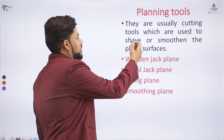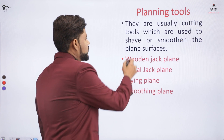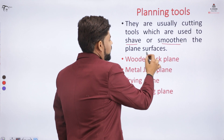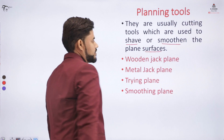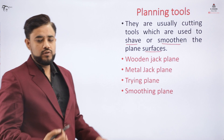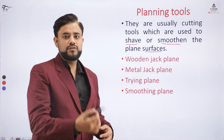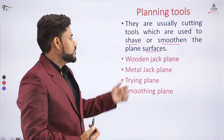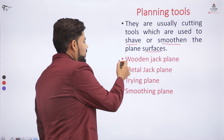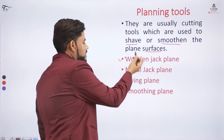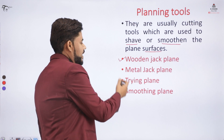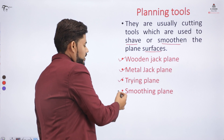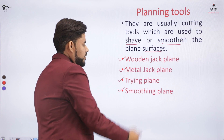Coming to the planing tool — the planing tool is a kind of cutting tool which is used to shave or smoothen plane surfaces. If we want to shave or smoothen the plane surface of wood, we use this planing tool. The categories include the wooden jack plane, the metal jack plane, and the drying plane or smoothening plane.